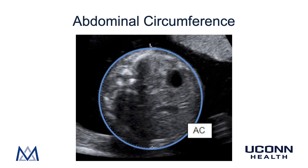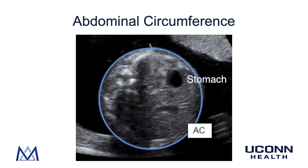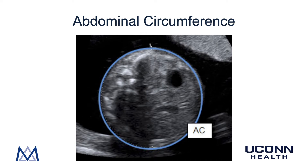The next measurement is the abdominal circumference. This also needs to be taken at a very particular location in the baby's abdomen. You can see the fetal spine at approximately 10 o'clock with a single rib coming off in either direction. The dark circle at 2 o'clock is the fetal stomach, and the dark collection at approximately 4 o'clock is the portal system of the liver. A proper abdominal circumference is usually a round circle, and the measurement is taken all around the outside of the abdomen.